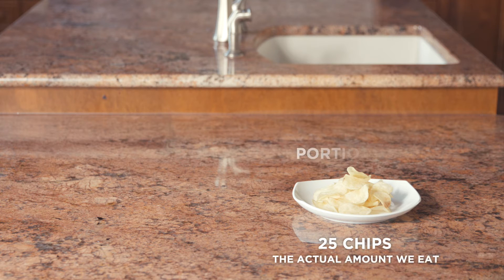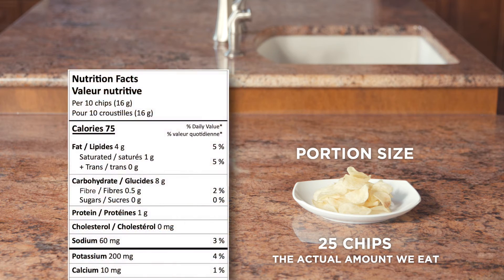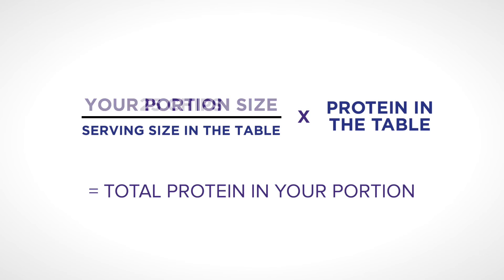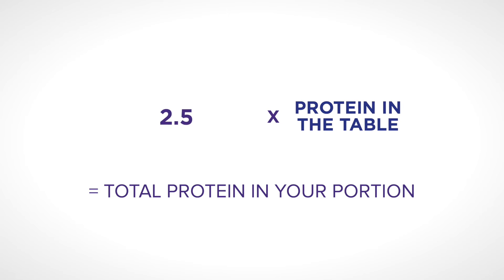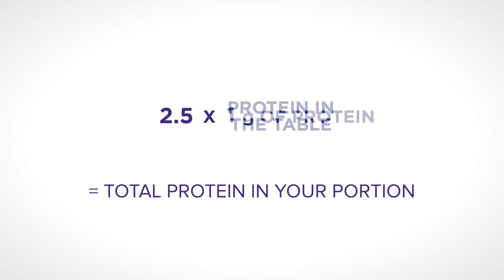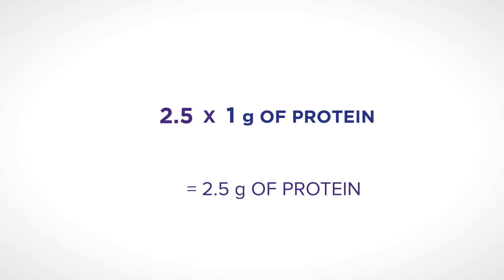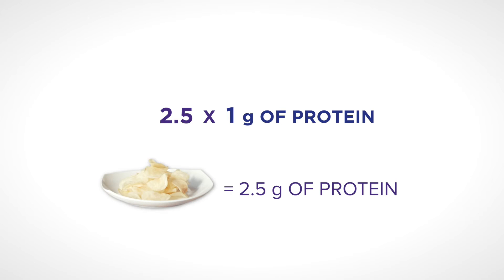Coming back to our example: these 25 chips are a portion size, but the nutrition facts table is written for a serving size of 10 chips. And based on the table, these 10 chips have 1 gram of protein. Now let's fill in the equation with this information. 25 chips divided by 10 chips equals 2.5. 2.5 times 1 gram gives you a total of 2.5 grams. This means that eating these 25 chips will give you 2.5 grams of protein.